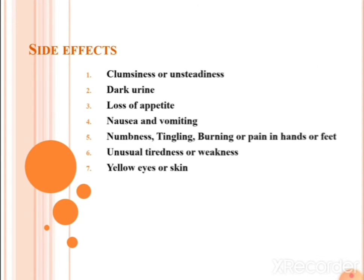The side effects of isoniazide include: clumsiness, unsteadiness, dark urine, loss of appetite, nausea and vomiting, numbness, tingling, burning or pain in hands or feet, unusual tiredness or weakness, and yellow eyes or skin (jaundice). Remember all these side effects.